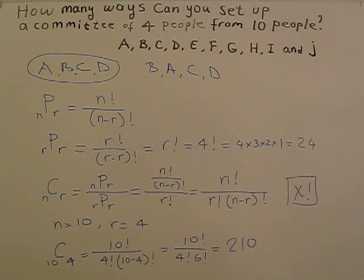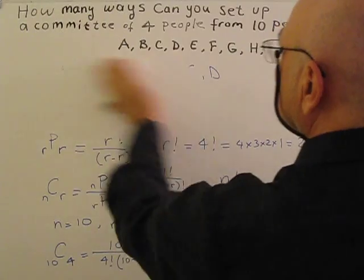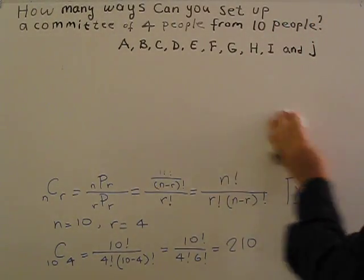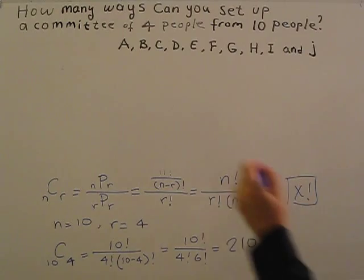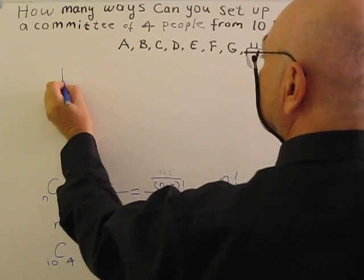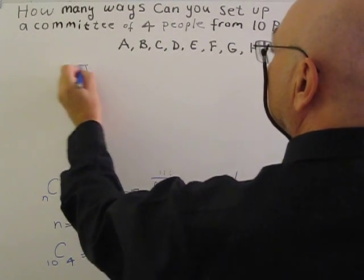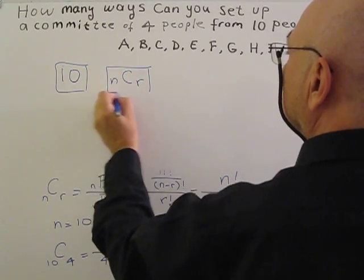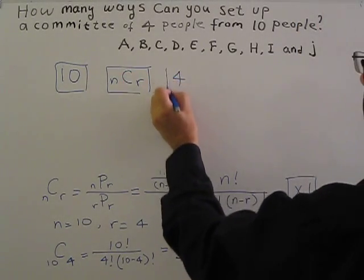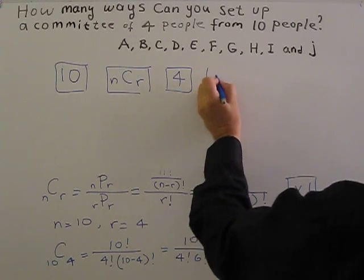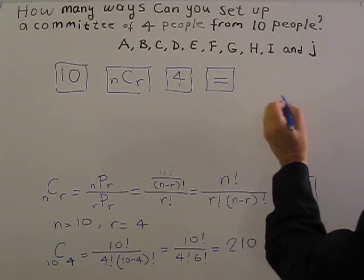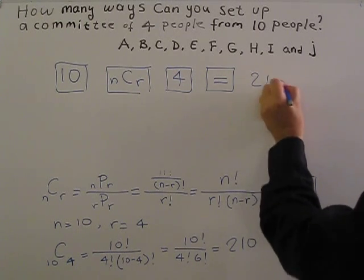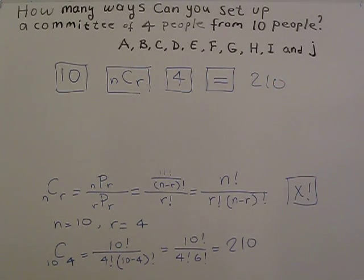But there are some advanced calculators. In fact, most of them have, you can only, okay, I am erasing this. You can just enter 10 first and N, C, R, then press enter 4, then enter equal. You will get 210. This is another way.